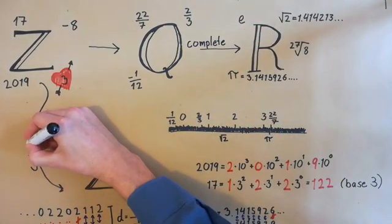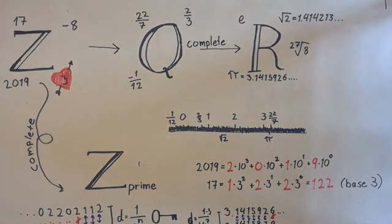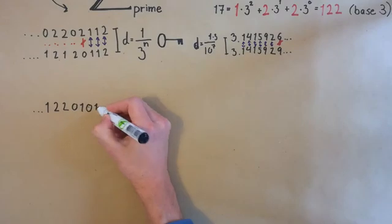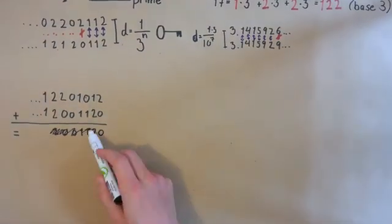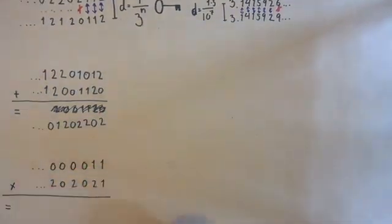This process of filling in all the gaps is called completion, by the way, if you want to look it up. Now that we have the 3-adic numbers, we are free to do addition, multiplication, even find square roots.